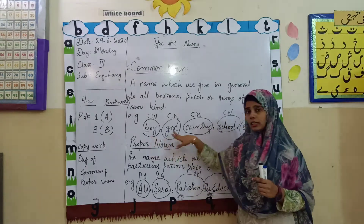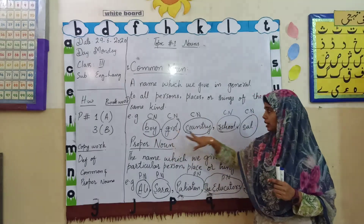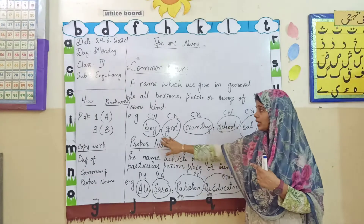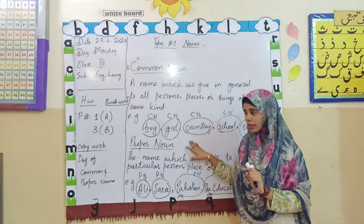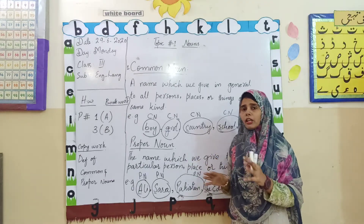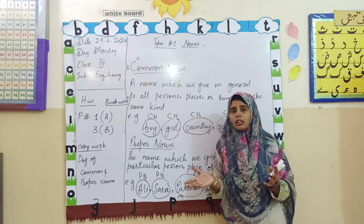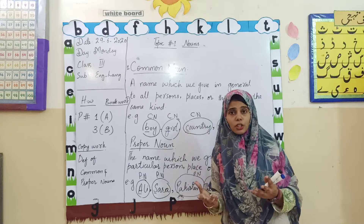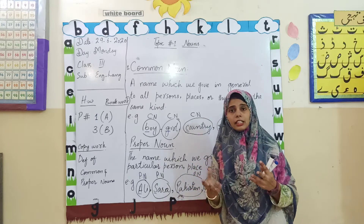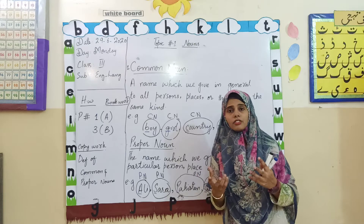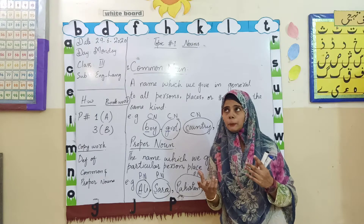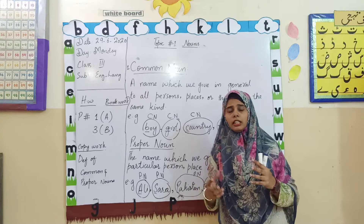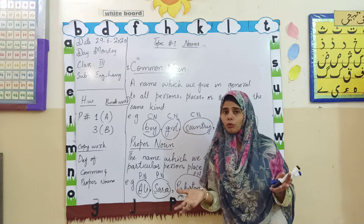Examples of common nouns: wife, girl, country, school, and cat. These are common nouns. Common nouns are the names of everything around you — there is a laptop at your home, many things in your surrounding. Things in your kitchen, your bedroom: table, chair. These are called common nouns.